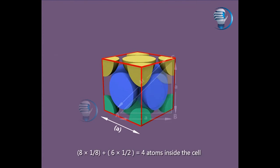8 multiplied by 1 divided by 8 plus 6 multiplied by 1 divided by 2 equals 4 atoms inside the unit cell.